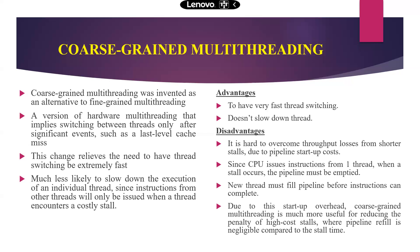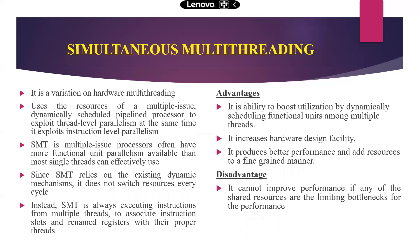Due to startup overhead, coarse-grained multi-threading is much more useful for reducing the penalty of high-cost stalls where pipeline refill is negligible compared to stall time. The third approach, simultaneous multi-threading (SMT), is the best one in all aspects. It is a variation of hardware multi-threading that uses the resources of a multiple-issue dynamically-scheduled pipeline processor to exploit thread-level parallelism, while at the same time exploiting instruction-level parallelism.